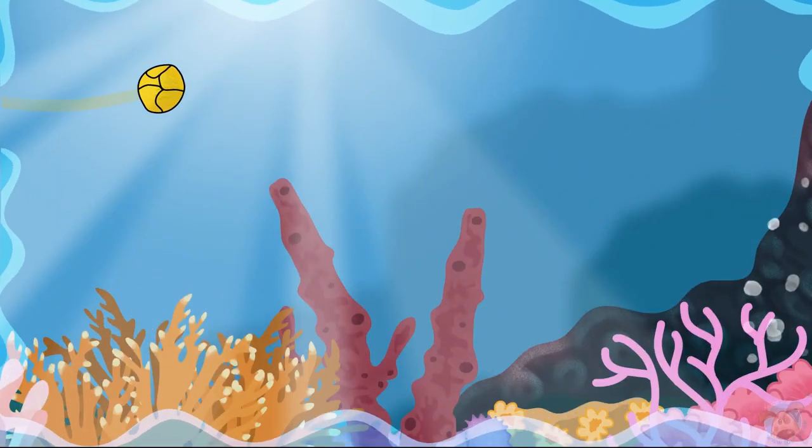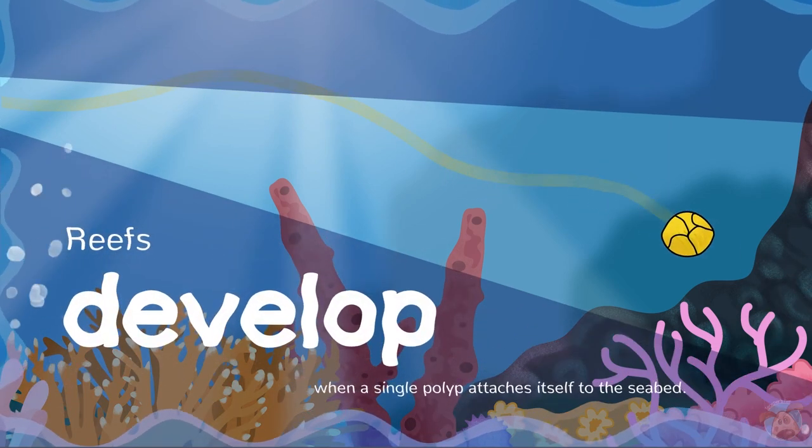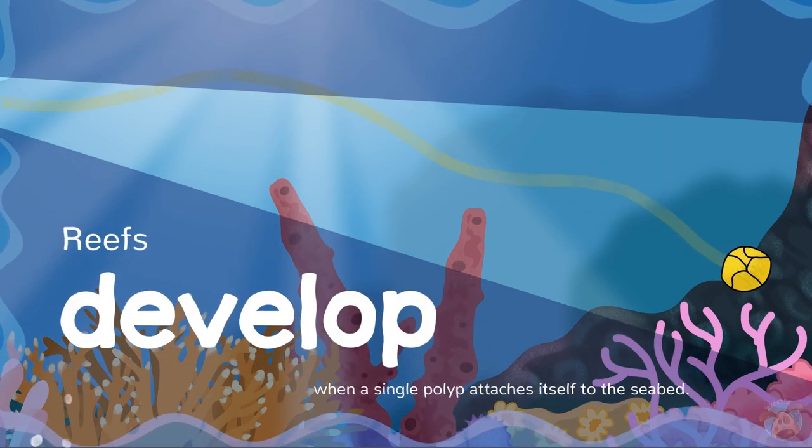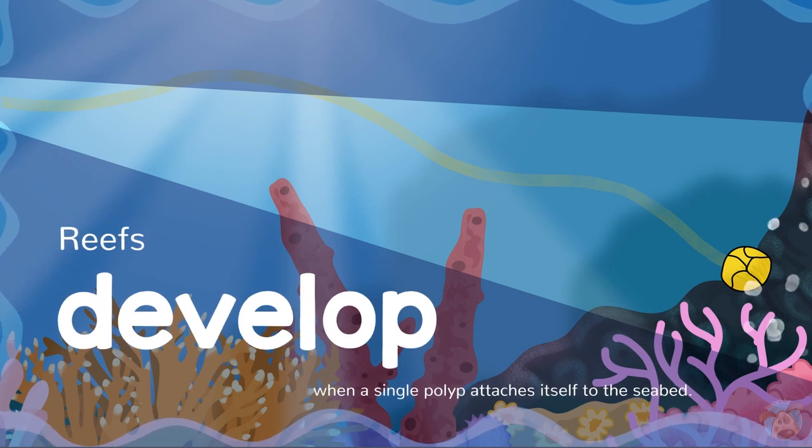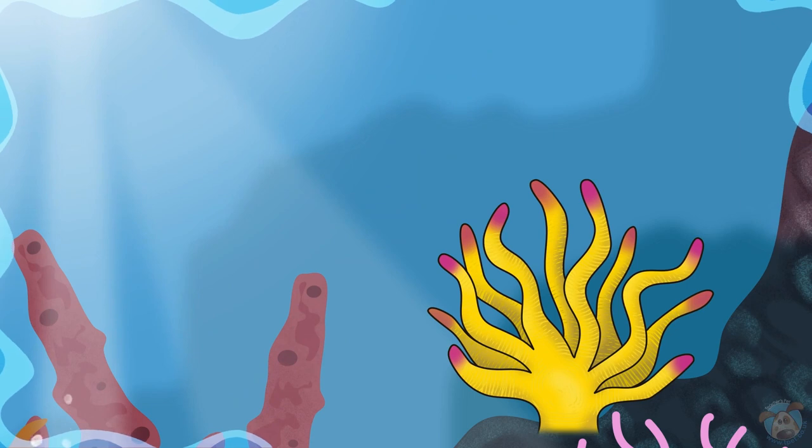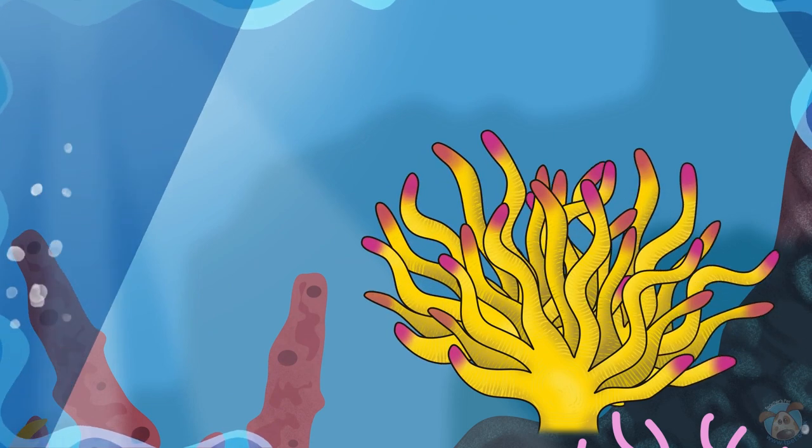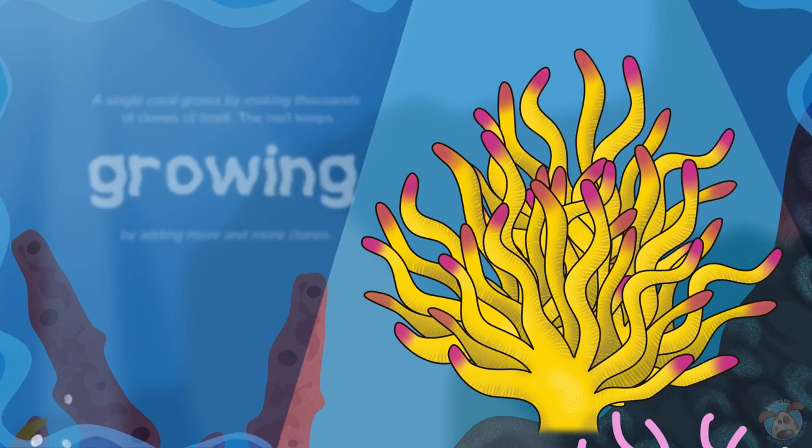Reefs develop when a single polyp attaches itself to the seabed. A single coral grows by making thousands of clones of itself. The reef keeps growing by adding more and more clones.